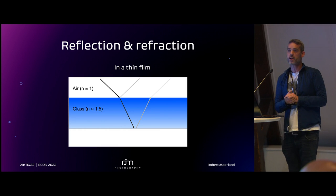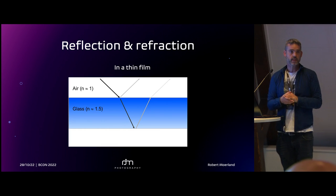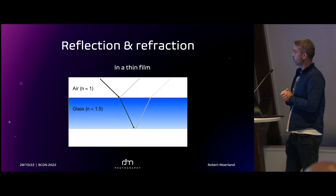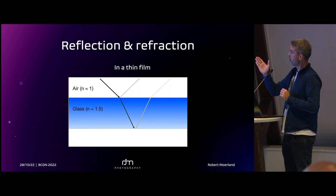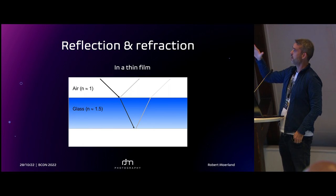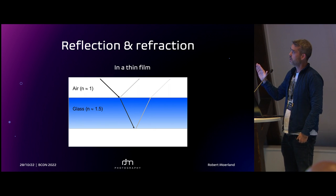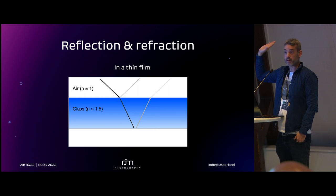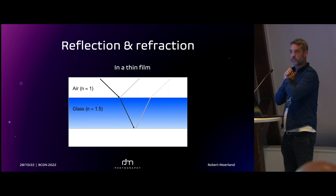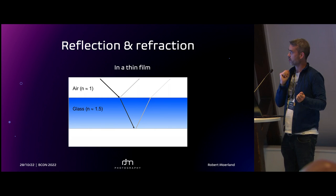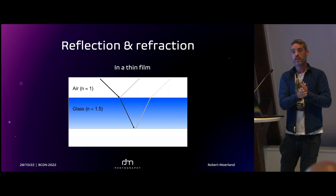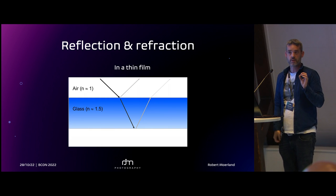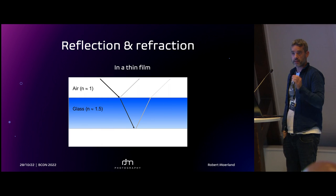Now let's go to a thinner object — still relatively thick, say a millimeter or so, which is macroscopic for light. A light ray comes in, a bit is reflected, a large amount is refracted, then I get an internal reflection which is subsequently refracted again. Cycles takes these two reflected light rays, adds them together, and that's your output.